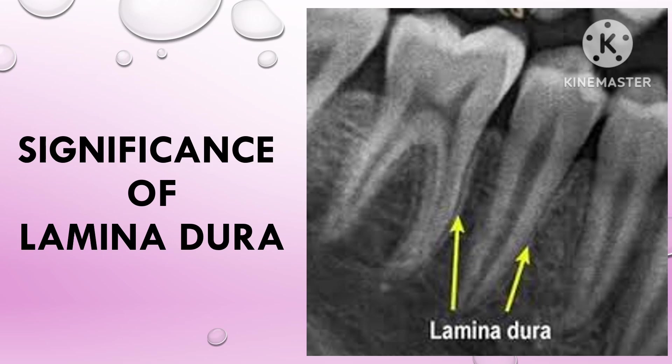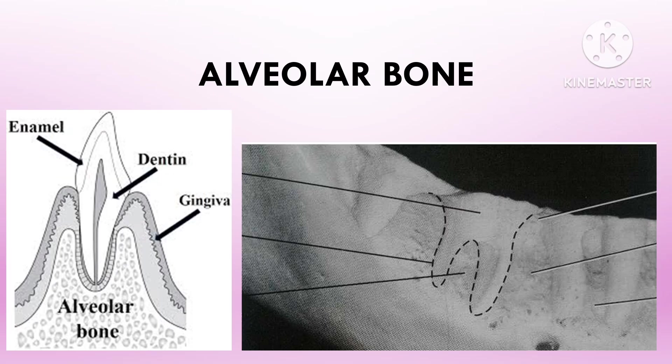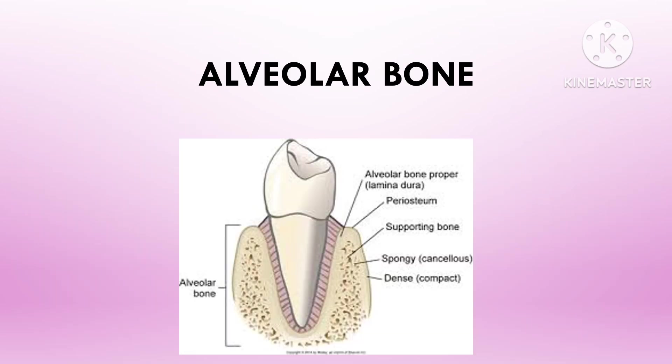The alveolar process is defined as the part of the maxilla and the mandible that forms and supports the sockets of the teeth. The alveolar bone or alveolar process can be divided into three main components based on its structure and function.